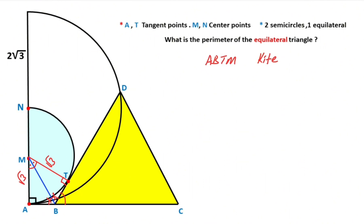We know that angle DBC is 60 degrees because the yellow triangle is given as an equilateral triangle. So these angles must each equal 60 degrees, which means these are must equal 30 degrees.